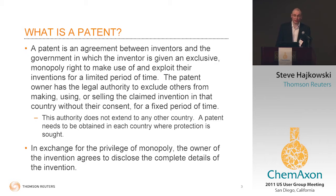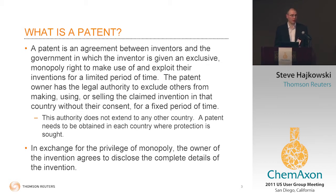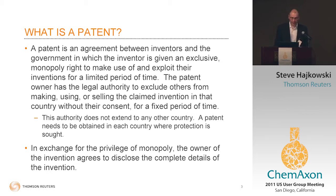One of the things that Thomson Reuters does is track ongoing patent publications and compile these patent families so that when running a patent search, we're really seeing individual inventions which encompass a whole series of documents in many cases — what we call the patent family. And of course, in exchange for this monopoly which the inventor gets once the patent is granted, they must disclose the full details of their invention within the patent document.